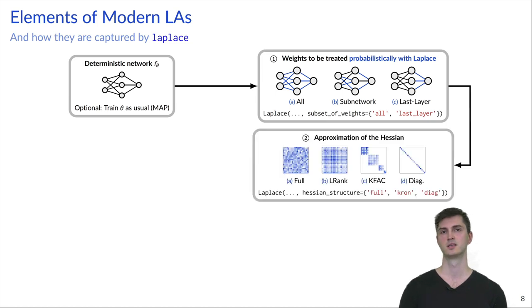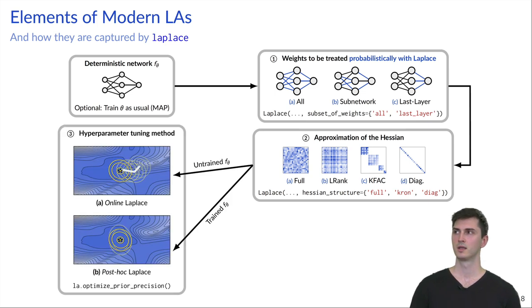The next choice you have to make is the structure of the Hessian approximation. And again, you have the choice of the full Hessian up to the diagonal Hessian. And the corresponding keyword in the Laplace interface is hessian_structure.